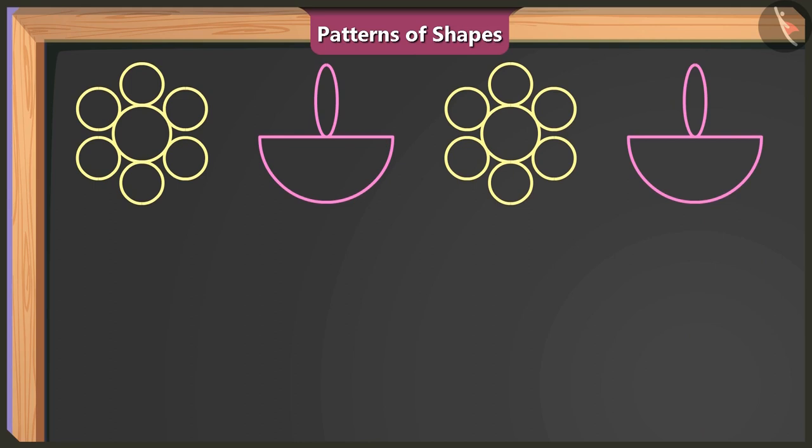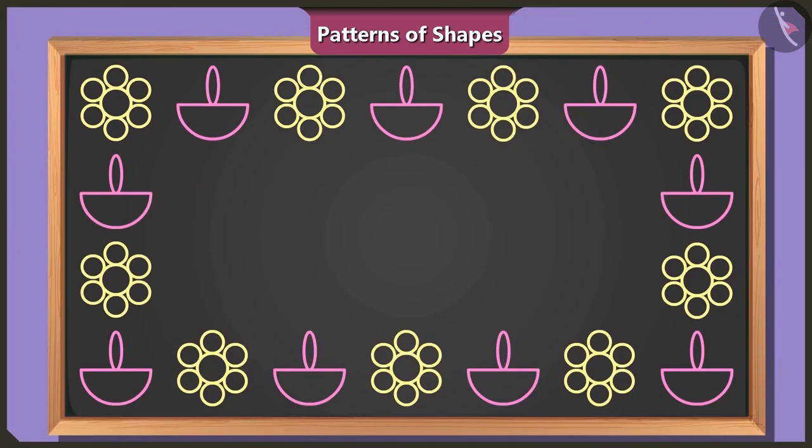So, we will keep repeating this sequence, a flower drawn out of circle shapes followed by a diya drawn from a semi-circle and an oval shape. Oh, yes. This looks like a pattern. Oh, lovely. You have made a beautiful pattern.